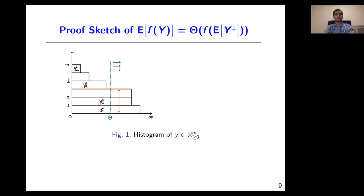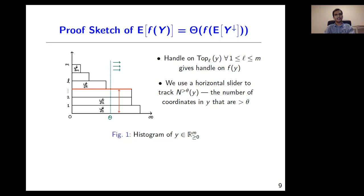Over the next few slides, I'll sketch a proof of our main theorem. For a fixed vector y, let us draw a bar diagram which we call the histogram of y. In this diagram, we sort the coordinates of y in decreasing order and vertically stack them one on top of the other, with the largest coordinates at the bottom. We control the top-L norm of y by using a horizontal slider that tracks the number of coordinates in y strictly larger than a threshold theta. It is easy to verify that the L-th largest coordinate of y is the smallest threshold theta at which the tracker dips below L.